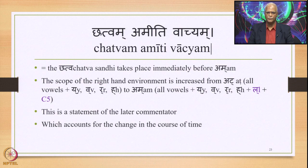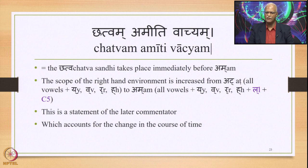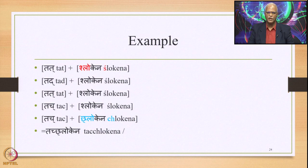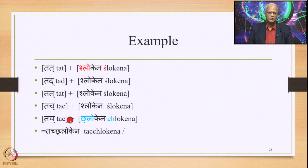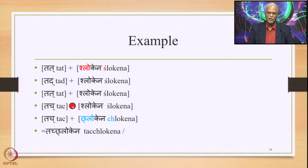There is another Vartika: Chhatvam Amiti Vachyam — Chattva Sandhi takes place immediately before Am. The scope of the right-hand environment is increased from At to Am by this Vartika, which is a statement of a later commentator accounting for change over time. Example: Tat plus Shlokena — Ta is a Jaya followed by Sh followed by La. La is not part of At, but with Am it becomes part of it. So we get Tat plus Chhlokena, where Sh is substituted by Ch, and with Jhalam Jashonte and Chatva Sandhi applying, Tach Chhlokena is the final output optionally.